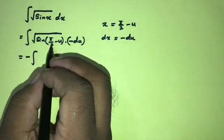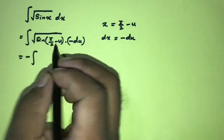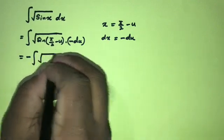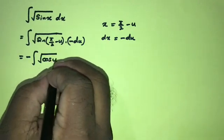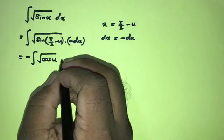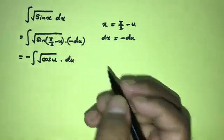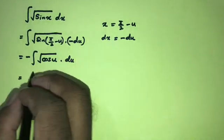Now the minus sign we can write outside of the integral, so minus times — we know sine of 5 over 2 minus u is equal to cosine of u — here du.